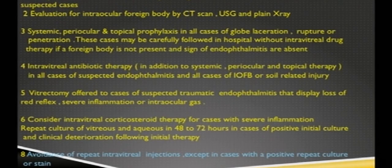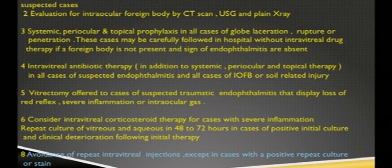There are guidelines for management of suspected traumatic endophthalmitis: prompt collection of a vitreous sample is a must, evaluation for intraocular foreign body is a must, systemic periocular topical antibiotics by all routes is important, vitrectomy in cases of suspected traumatic endophthalmitis. Consider intravitreal corticosteroids — a controversial topic — in cases of severe inflammation. Avoid repeat intravitreal injections except in cases with a positive repeat culture or stain, or PCR in culture-negative cases.